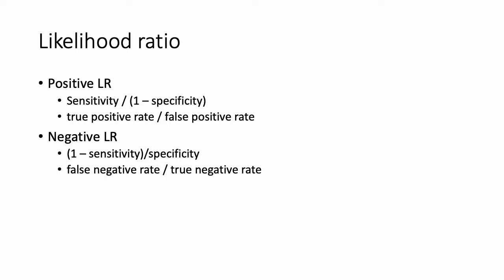Likelihood ratios are another tool to understand the results of the test that you ordered, because they tell you how much the use of that test will alter the probability of the patient having the disease that you're testing for. The positive likelihood ratio is the probability that a positive test would be expected in a patient with the disease, divided by the probability that a positive test would be expected in a patient without the disease — sensitivity over 1 minus specificity, or the true positive rate over the false positive rate.